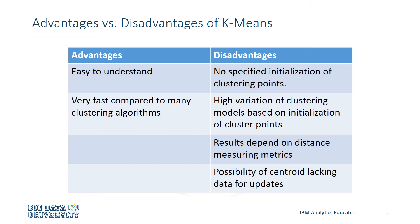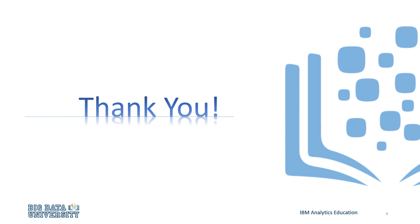K-means also has some disadvantages as well. First, it has no specified initialization of cluster points, and it has a high variation of clustering models based on initialization of cluster points. Second, getting accurate results depends on distance-measuring metrics. And finally, there's the possibility of a centroid not having data points in its group, therefore not being able to be updated. So, I'll see you in the next one. Thanks for watching.